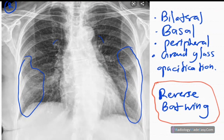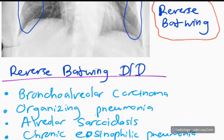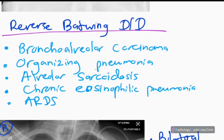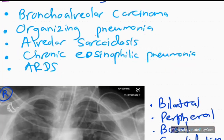The differential diagnoses for reverse bat-wing appearance include bronchioloalveolar carcinoma, organizing pneumonias, alveolar sarcoidosis, chronic eosinophilic pneumonia, and acute respiratory distress syndrome.